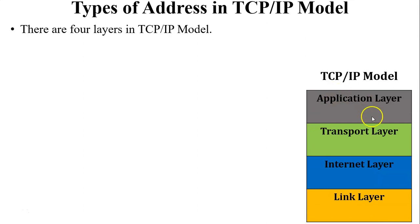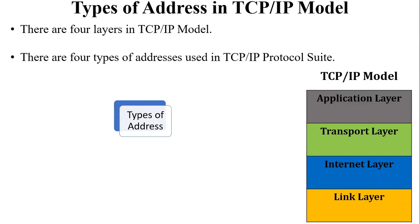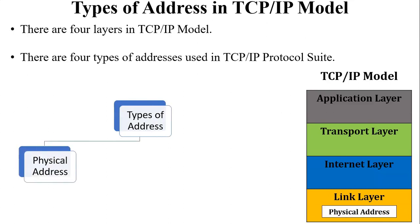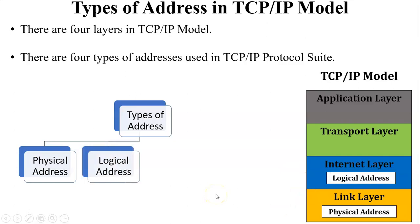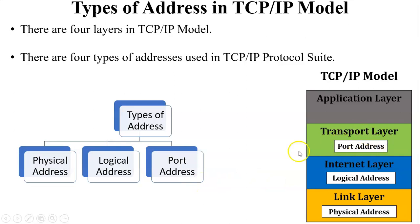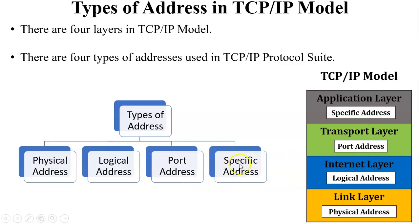In this diagram you can see: application layer, transport layer, internet layer, and link layer. There are four types of addresses used in the TCP/IP protocol suite. The first is the physical address used at the link layer. The second is the logical address used at the internet layer. The third is the port address used at the transport layer, and the fourth is the specific address used at the application layer.